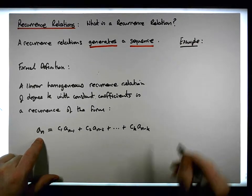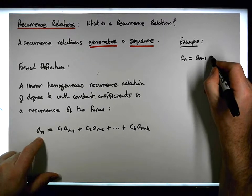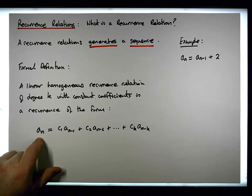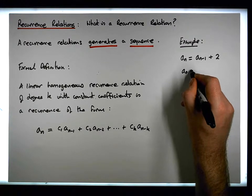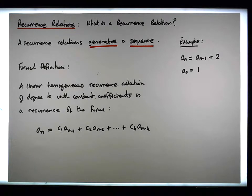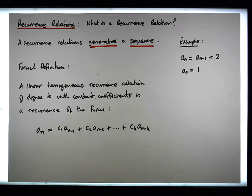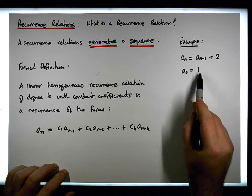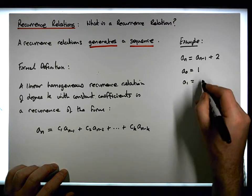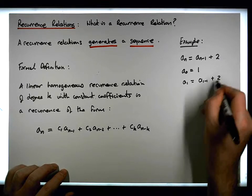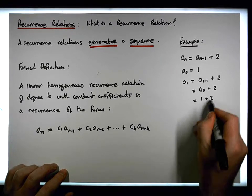I might define the nth term of a sequence to be simply equal to the term prior to the nth term plus two, where I also define the starting term: a_0 equals one. If we pump this particular recurrence to see what comes out, the first term is one, so a_1 equals a_{1-1} plus two, which is a_0 plus two, and since a_0 equals one, that gives us one plus two, which equals three.